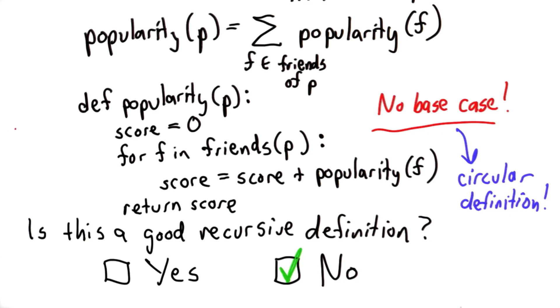So how can we fix this problem? Well, the first thing we should think about is, can we give a base case? All of the other recursive definitions we had, we had a way of stopping.